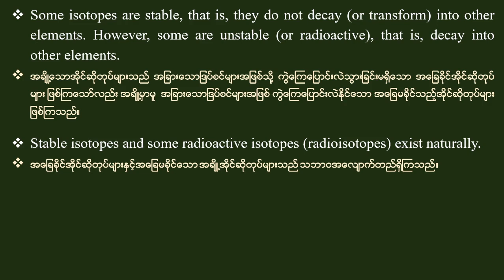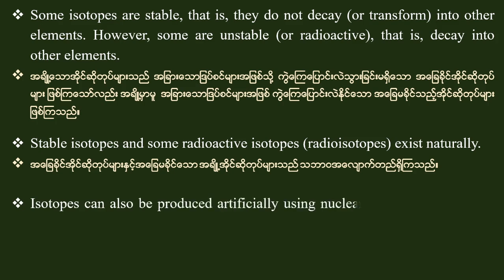Radioactive isotopes can also be produced artificially using nuclear reactors and particle accelerators.